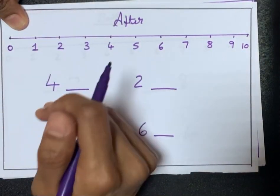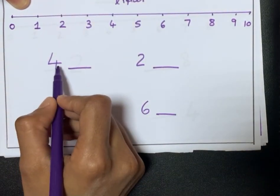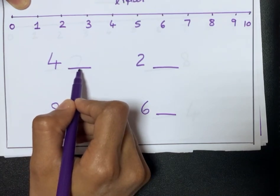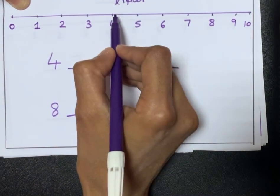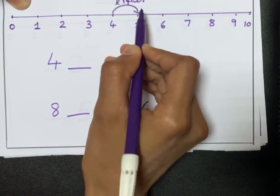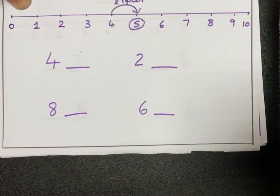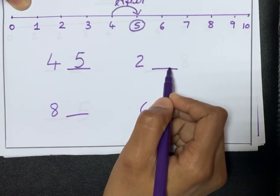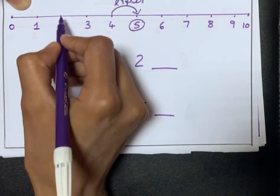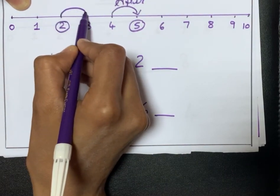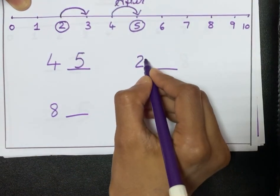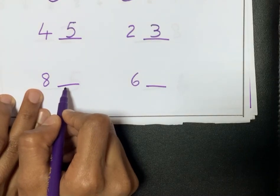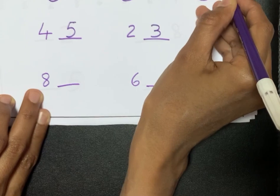On the scale, write some examples. Here I have written 4 with a dash on the right-hand side. If the dash is on the right, that means it is asking for the 'after' number — jump one number to the right, so after 4 is 5. Similarly, 2 with a dash on the right: jump one to the right, that means 3. The number after 2 is 3. Here 8 with a dash on the right: jump one to the right, that is 9.